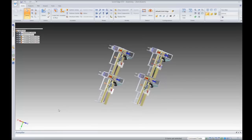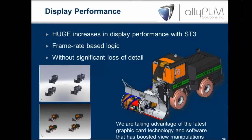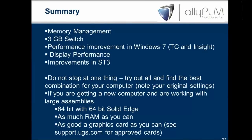I hope you get some view of how that is over the web and notice what these settings do for you and how you can improve performance on your machine. In summary, we talked about memory management, the 3GB switch, performance improvements in Windows 7 and Vista — especially when dealing with Teamcenter and Insight, close down those Windows Explorer windows or use icons instead of rendered pictures — display performance and improvements in ST3. Don't stop at one thing. We've given you this toolbox over two weeks. Gather all those tools together and try as many as you can to find your optimal performance.